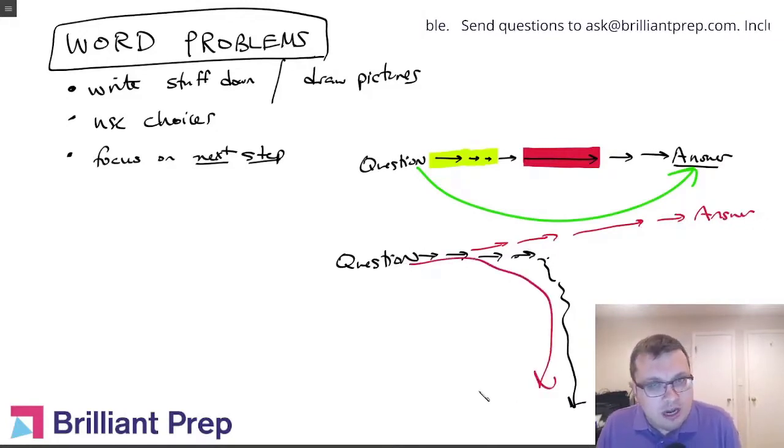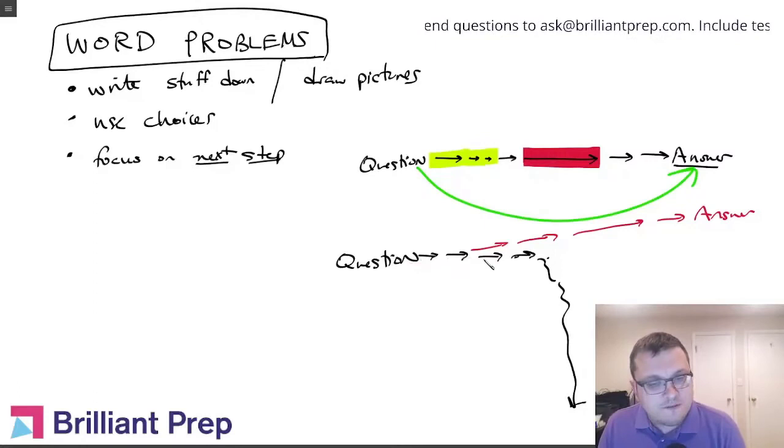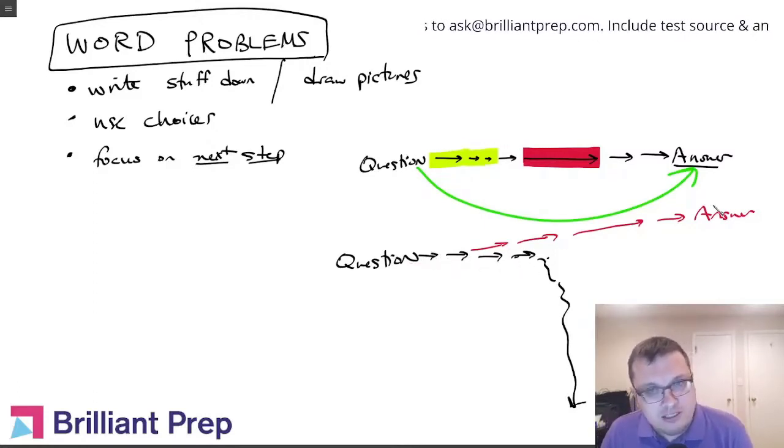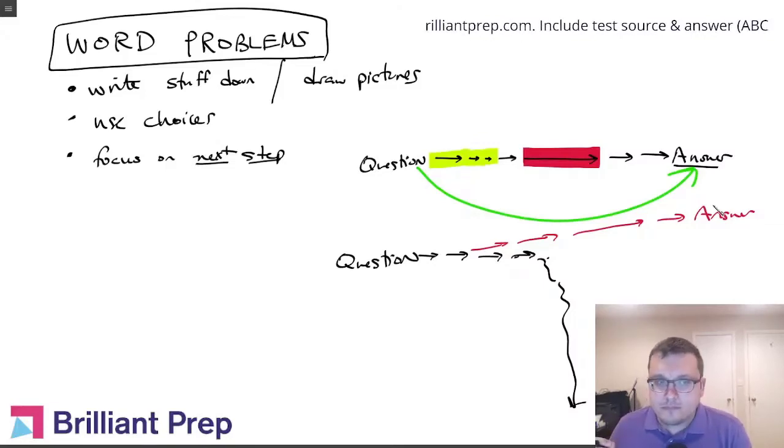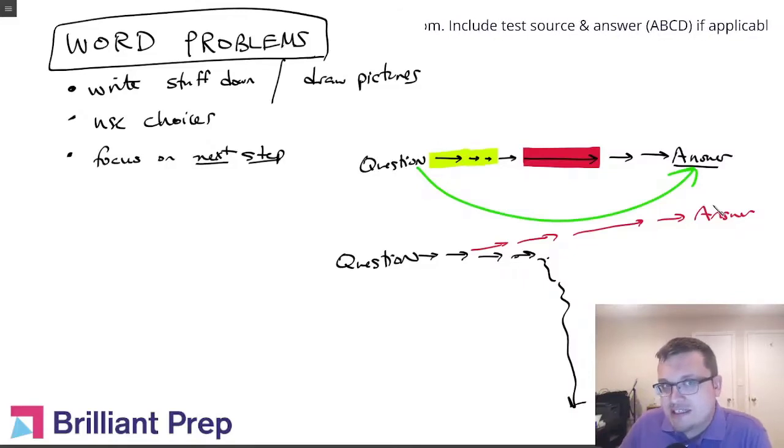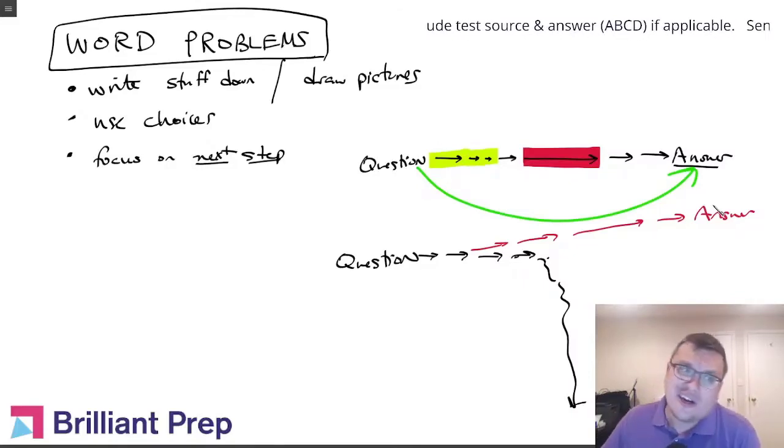So yes, you're not necessarily going in one smooth go, but that process of figuring out what your steps are can help you branch out into another thought process. So write things down, focus on the next step, use the choices. That's going to get you the best chances in answering these questions.